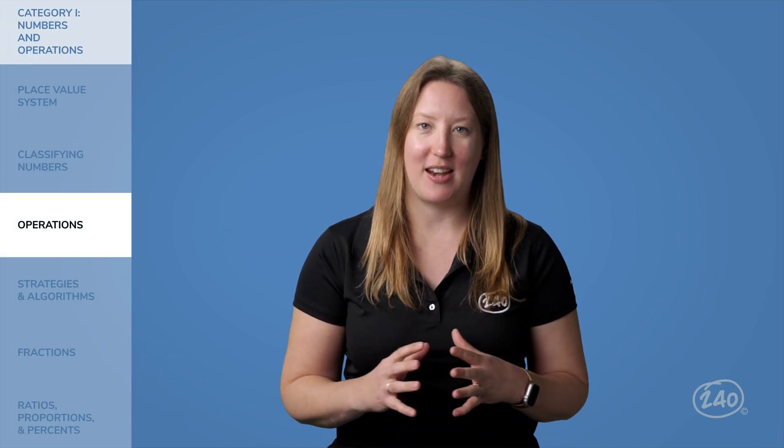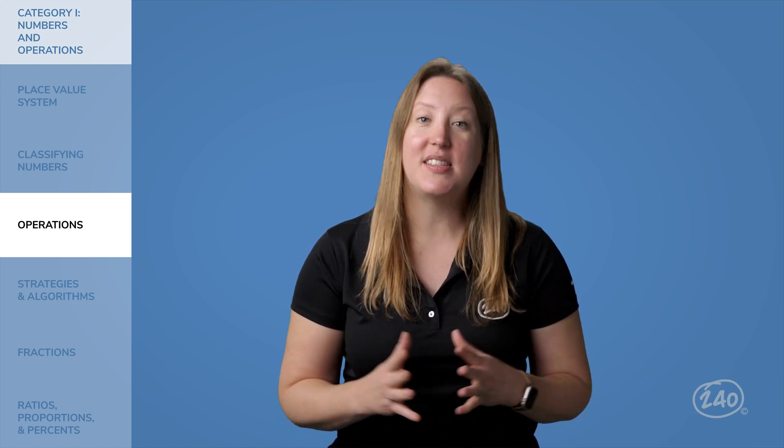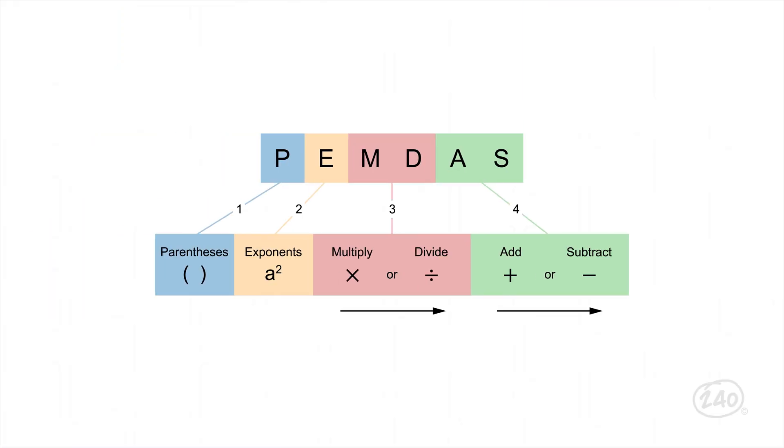Let's look at operations as an example. The order of operations is an important part of the operations category and shows up on almost every exam. Basically, you're going to need to know how to add, subtract, multiply, and divide, and use parentheses and exponents — and be sure you do it all in the correct order. This can include fractions, decimals, and negative numbers too. PEMDAS helps us keep it all straight.